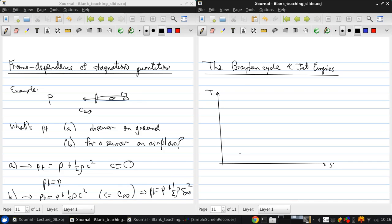So if we draw a TS diagram and draw on three pressure curves, then the cycle looks like this, the ideal cycle. It goes around this way.